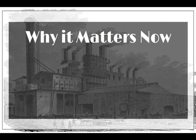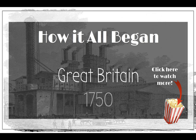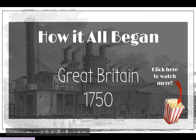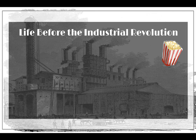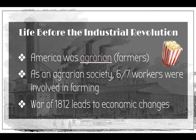The main idea of what we're talking about today is that new machines and factories changed the way people lived and worked in the late 1700s and early 1800s. Prior to the War of 1812 we were a farming community — that's what most people did, and anything they needed they made for themselves. These industrial developments that began more than 200 years ago continue today in this constant process of improving on what was already done to make life easier. It all began in Great Britain in 1750, and those ideas were brought to America by inventors, businessmen, and manufacturers.